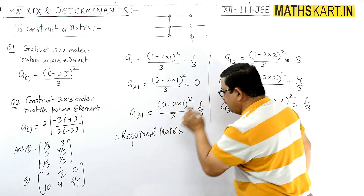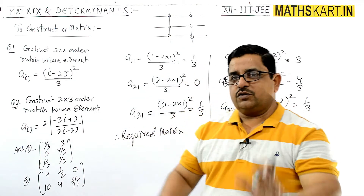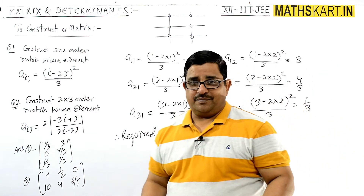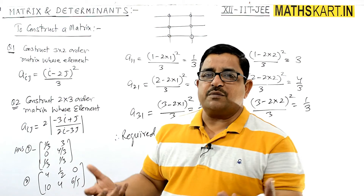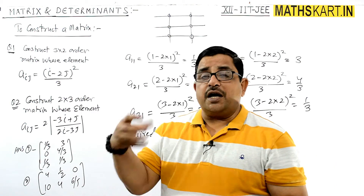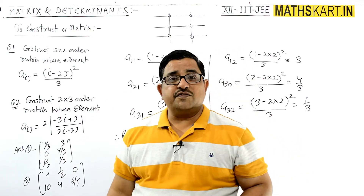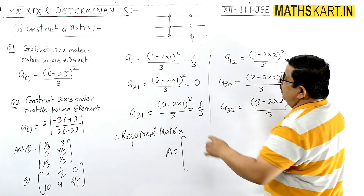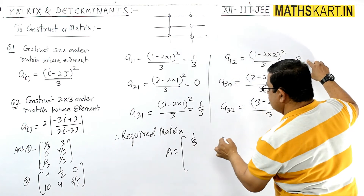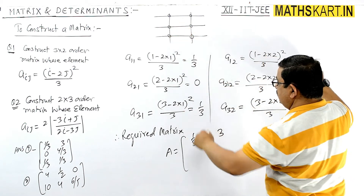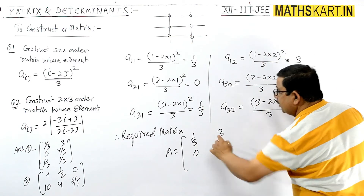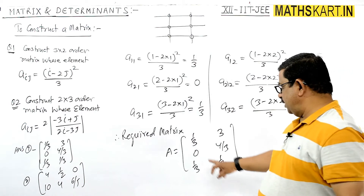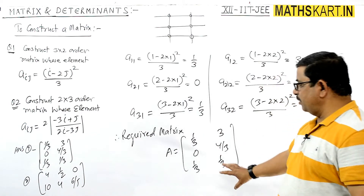It is very easy work. Therefore, the required matrix equals: first row [1/3, 3], second row [0, 4/3], third row [1/3, 1/3]. The last member is also 1/3. So this is completed — very easy.